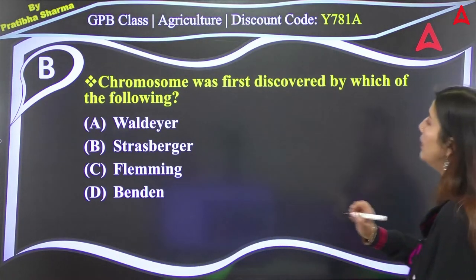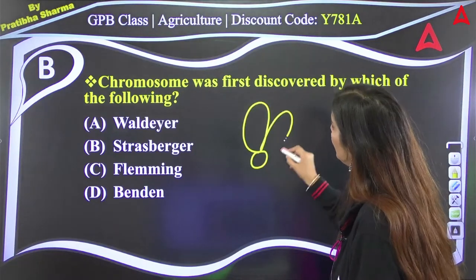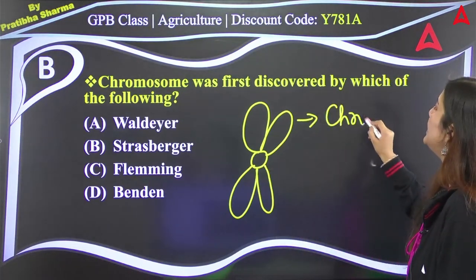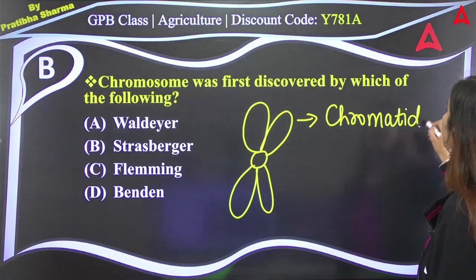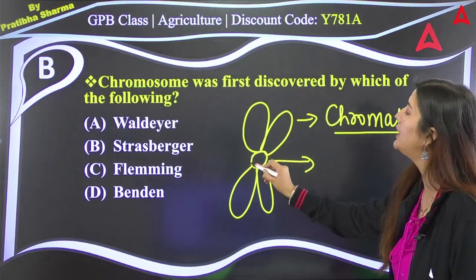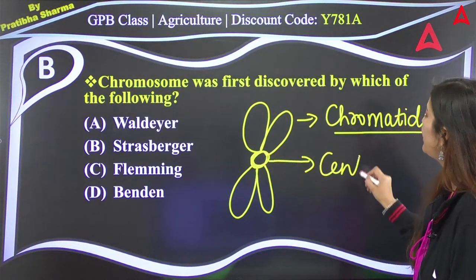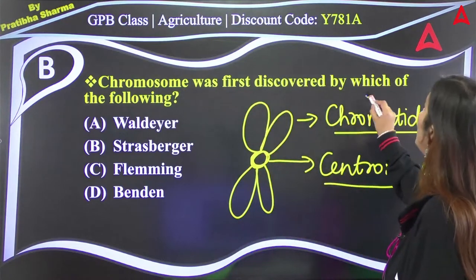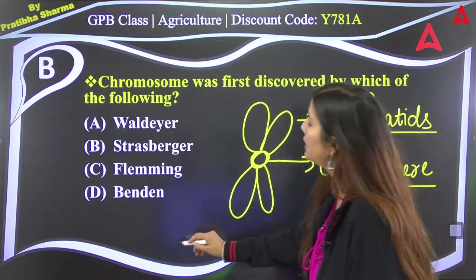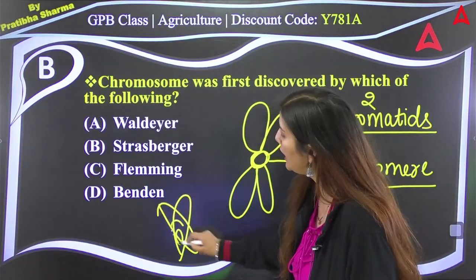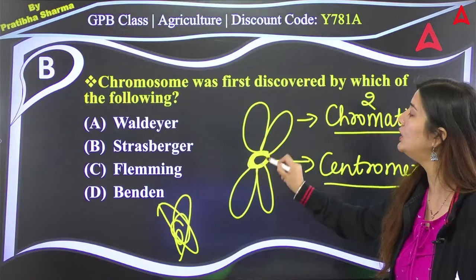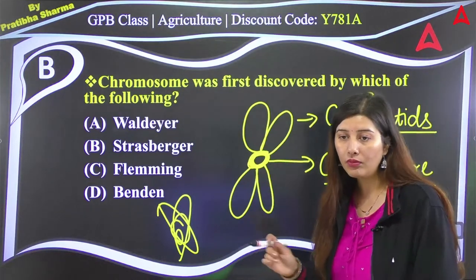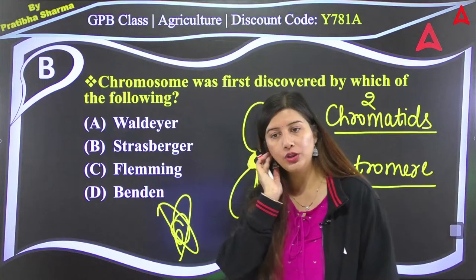Now take out your notebooks. This is what a chromosome looks like under the microscope. The two arms you see are called chromatids. The region in the center is called the centromere. One chromosome contains two chromatids. They appear to be four but are actually two, divided by the centromere.